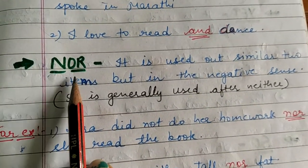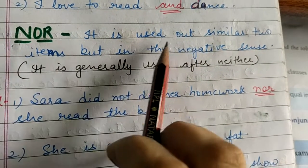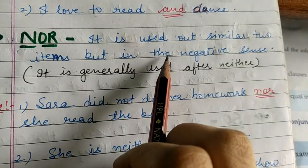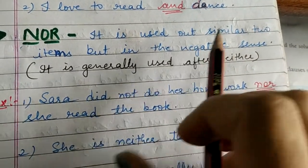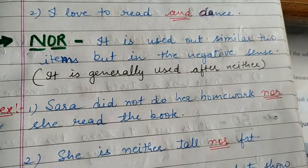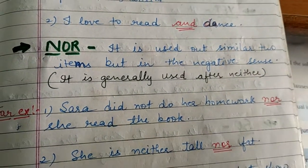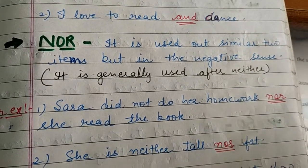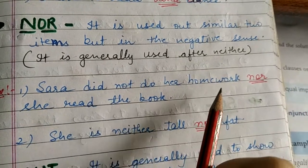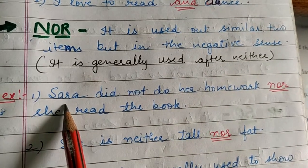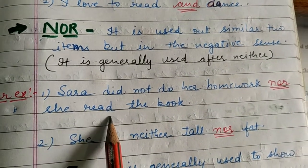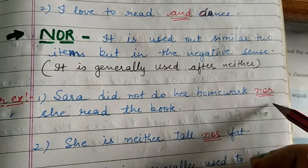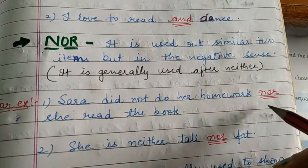Next conjunction is 'nor'. Nor is used to point out two similar items but in a negative sense — negative sense mein use kiya jata hai: nahi yeh, nahi woh. It is generally used in combination with 'neither'. For example: 'Sarah did not do her homework, nor did she read the book.' Sarah ne nahi to homework kiya, nahi usne book read ki. Here we are joining two negative sentences with the coordinating conjunction 'nor'.